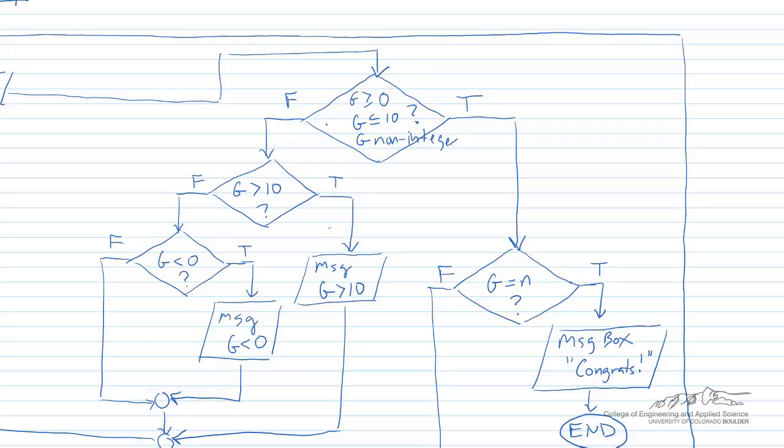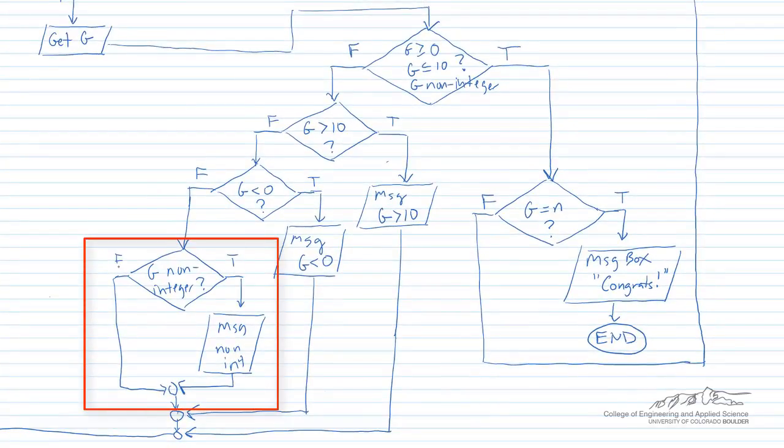The first thing we do is now we have to have three things satisfied. G has to be greater than or equal to 0, less than or equal to 10, and a non-integer. So I added one little line there. All three of those have to be true in order for us to exit and continue on with the guessing game.